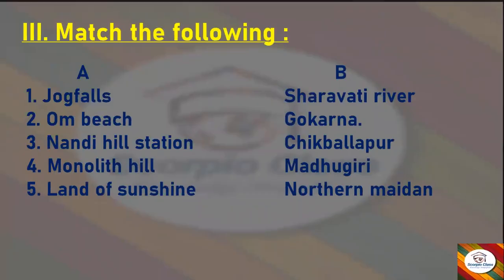Next main section: Match the Following. Column A matched with Column B. Jog Falls — Sharavati River. Om Beach — Gokarna. Nandi Hill Station — Chikballapur. Monolith Hill — Madhugiri. Land of Sunshine — Northern Maidan. These are the correctly matched answers.